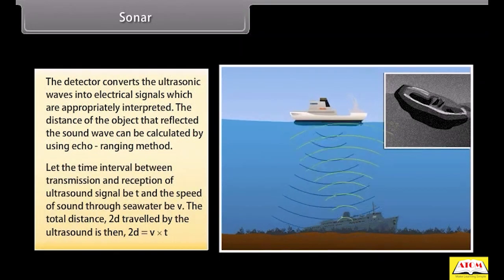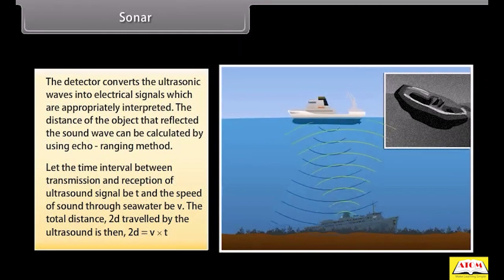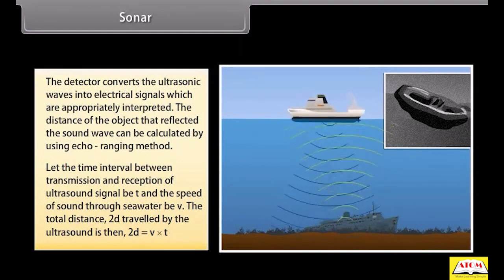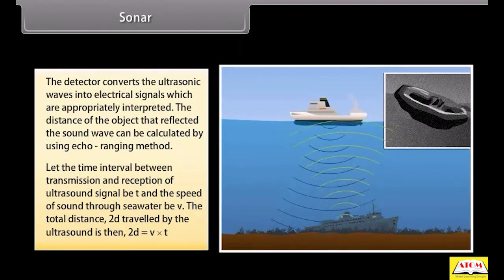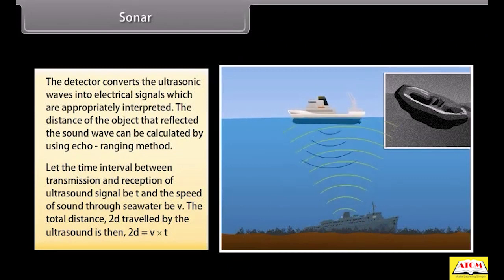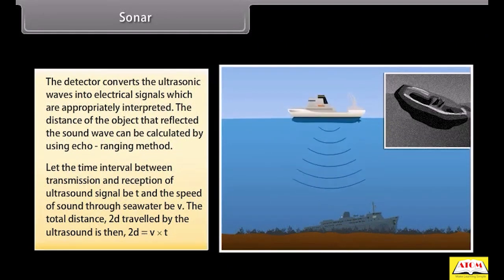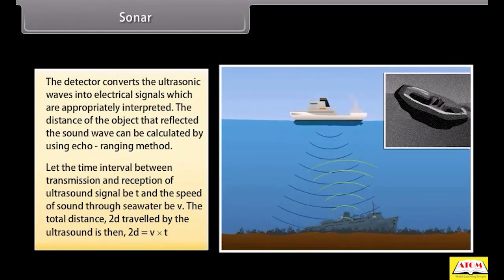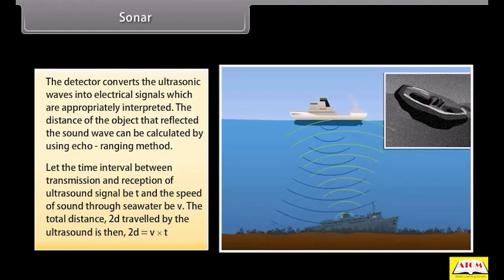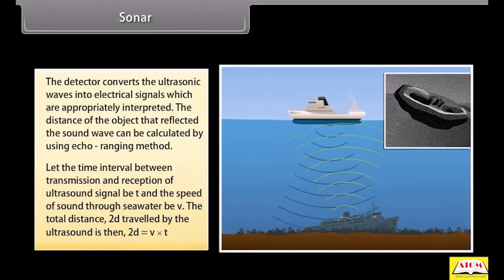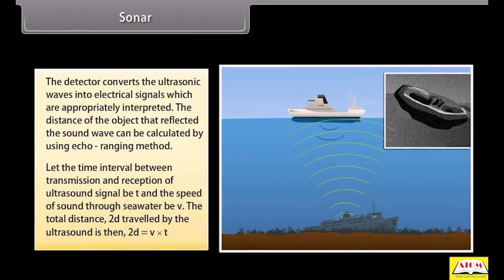The distance of the object that reflected the sound wave can be calculated by using echo ranging method. Let the time interval between transmission and reception of ultrasound signal be T and the speed of sound through seawater be V. The total distance 2D travelled by the ultrasound is then 2D is equal to V into T. This is the echo ranging method.